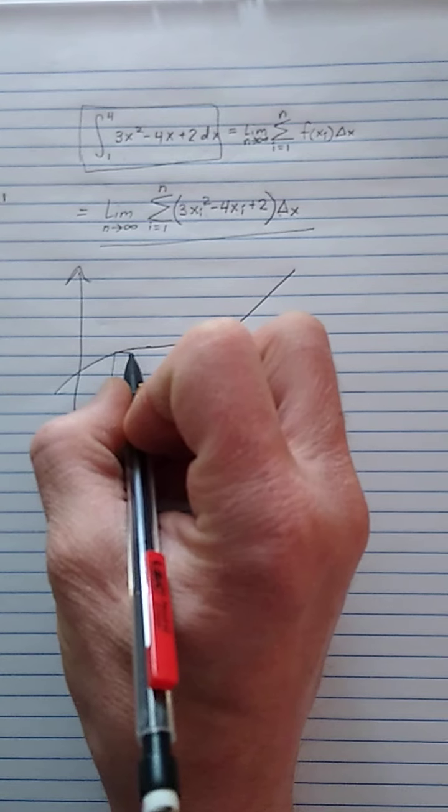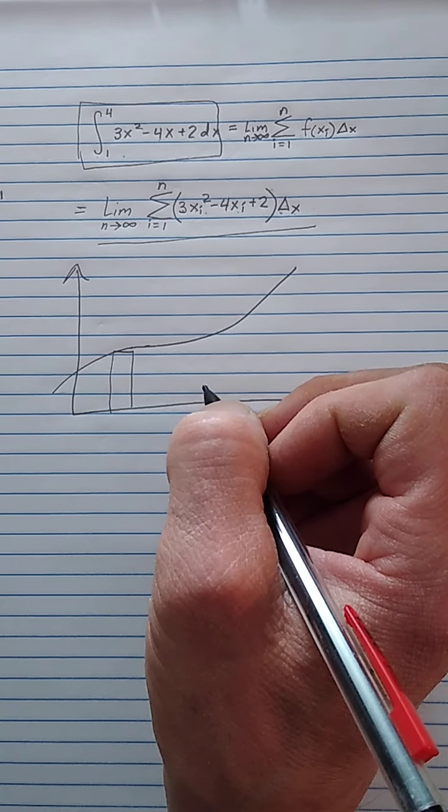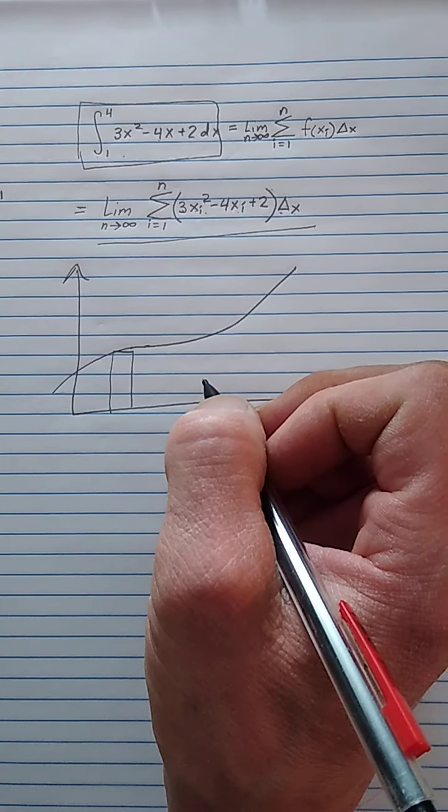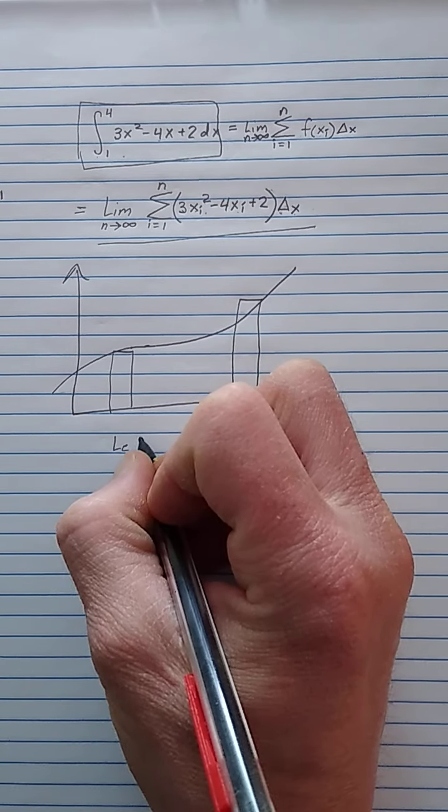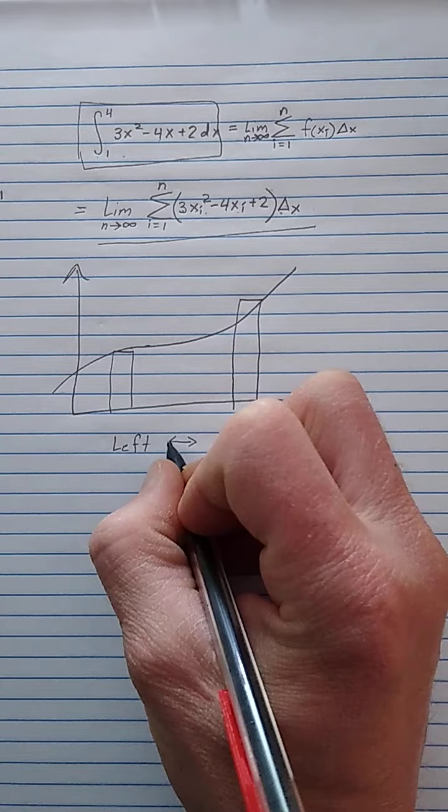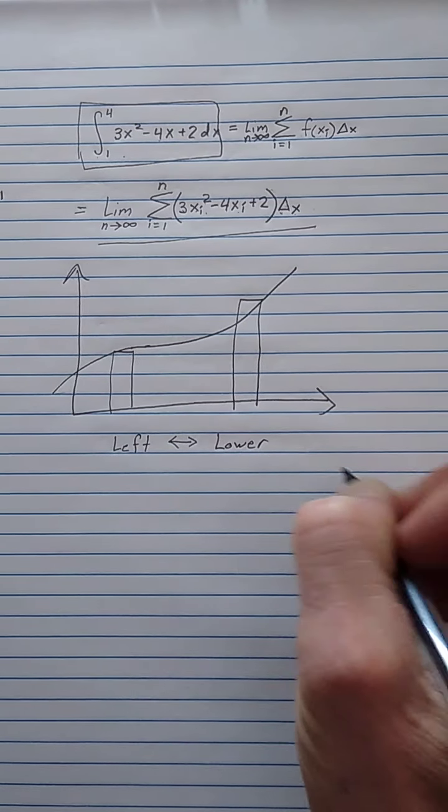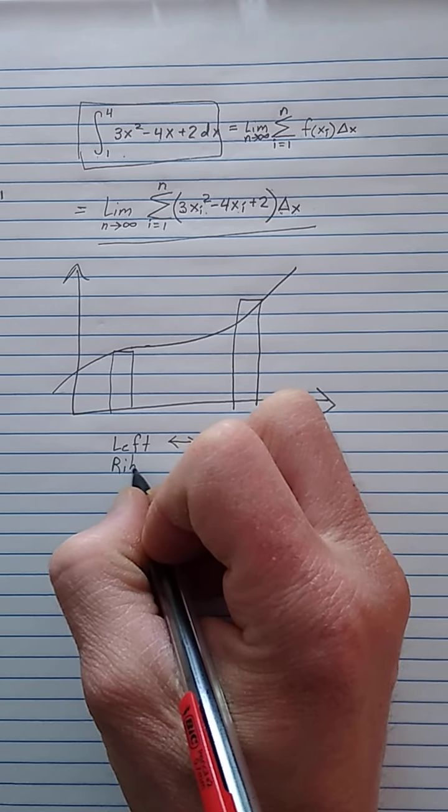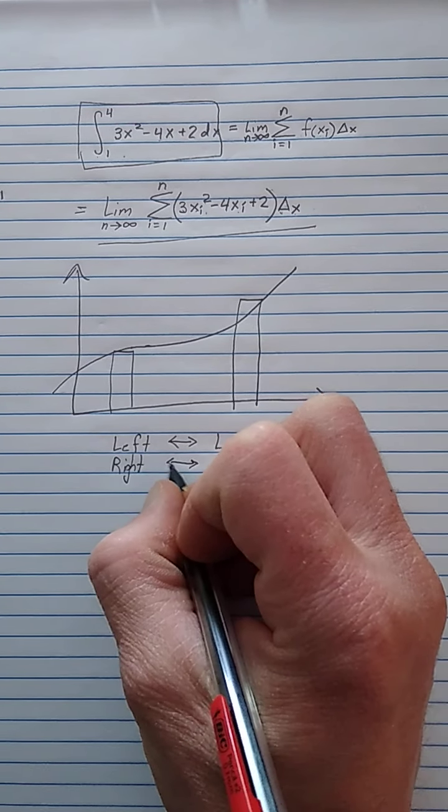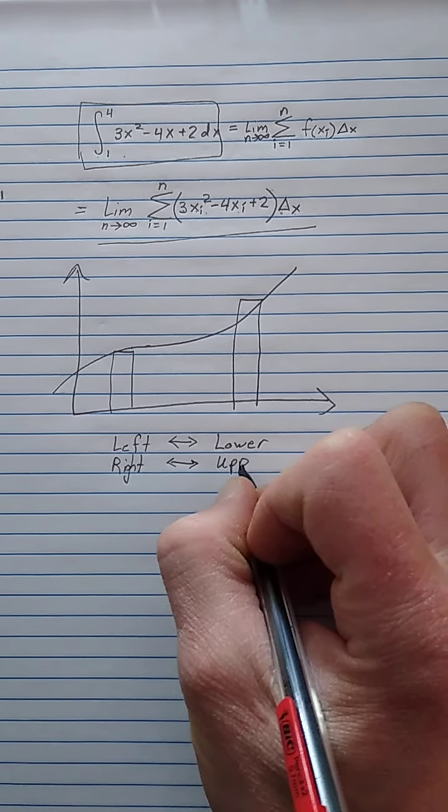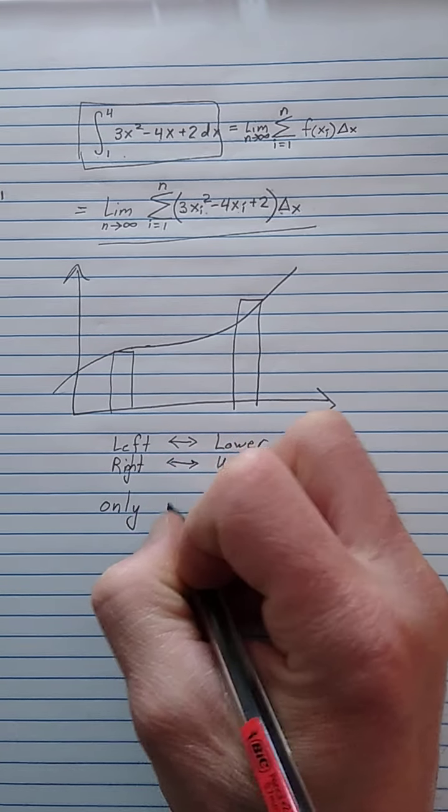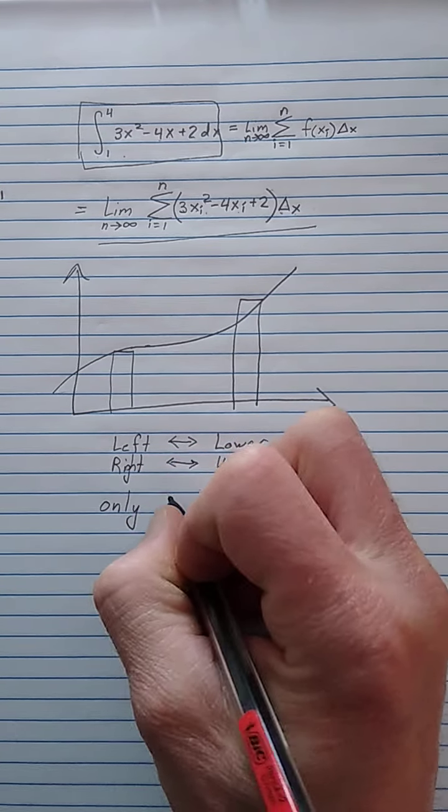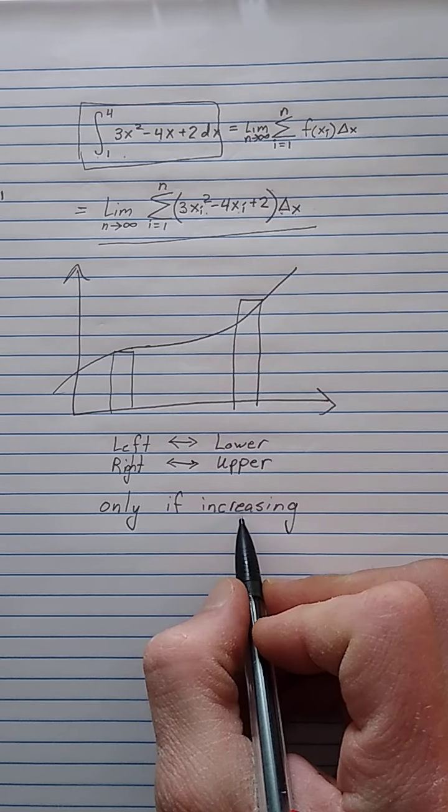So because of that, if I were to take left-hand limits, I would get an underestimate or the lower estimate. And if I were to take right-hand limits, I would get an overestimate or the upper estimate. So left-hand limits correspond to the lower estimate, and right-hand limits correspond to the upper estimate. This only works if the function is increasing. If the function is decreasing, then we switch these.